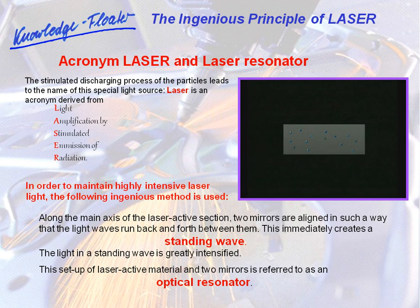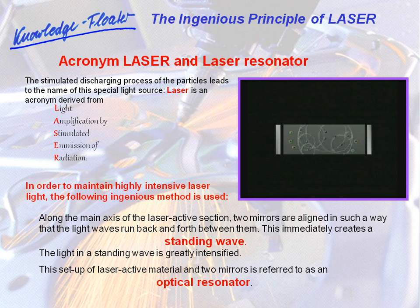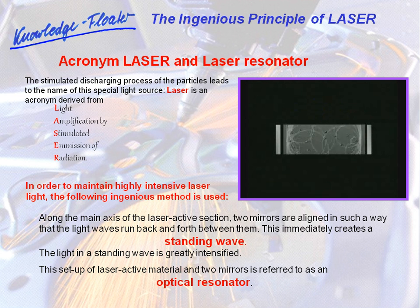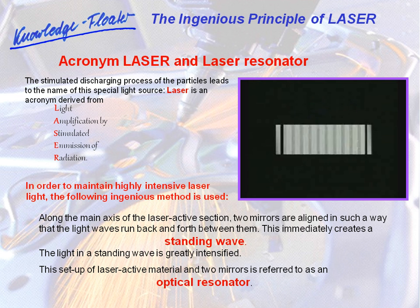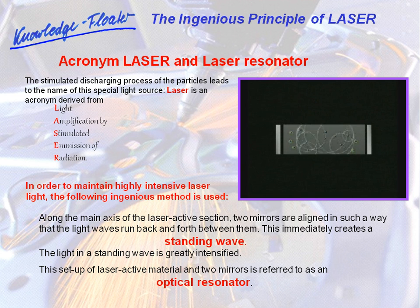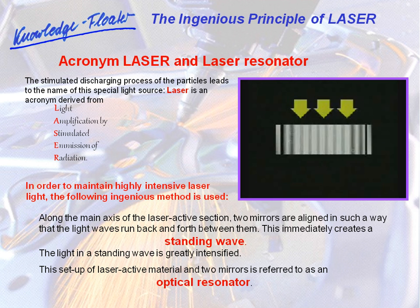In order to maintain highly intensive laser light, the following ingenious method is used. Along the main axis of the laser active section, two mirrors are aligned in such a way that the light waves run back and forth between them. This immediately creates a standing wave. The light in a standing wave is greatly intensified because the pump light continues to excite further particles, which are then discharged by the waves. This setup of laser active material and two mirrors is referred to as an optical resonator.